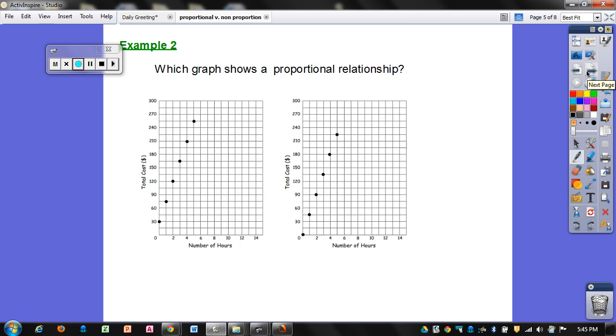Example 2, which graph shows a proportional relationship? So over here I have this data but my y-intercept is 30. So since it does not go through the origin, since my y-intercept is not 0, this one is non-proportional.